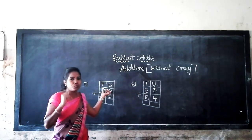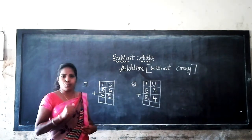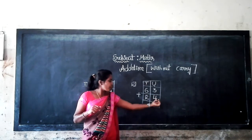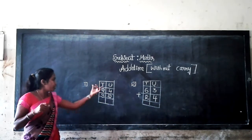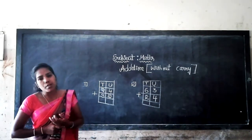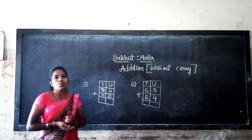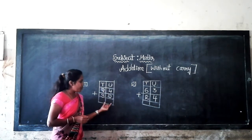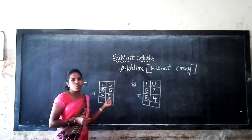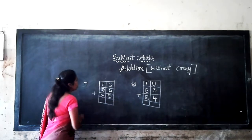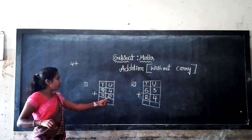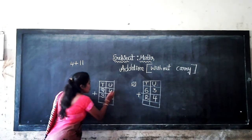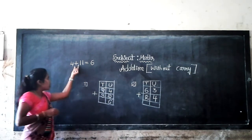In 24 there are 2 tens and 4 units. In 32 there are 3 tens and 2 units. Firstly we will add the unit place numbers. The unit place numbers are 4 and 2. What is the sum of 4 and 2? 4 plus 2 — count from 4: after 4 is 5, after 5 is 6. So 4 plus 2 is equal to 6. It is called simple addition.